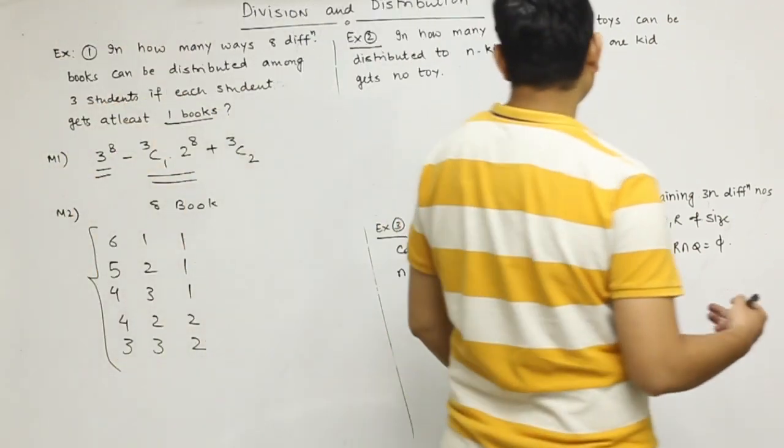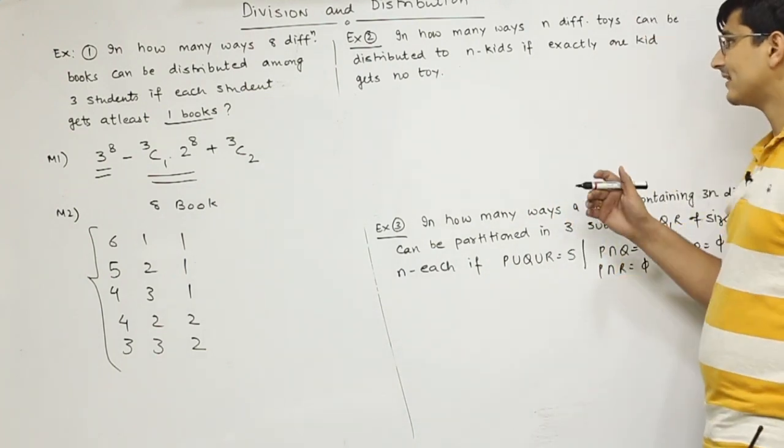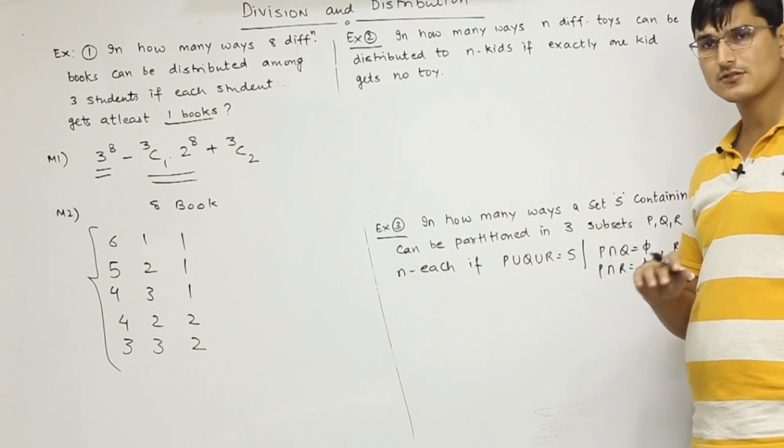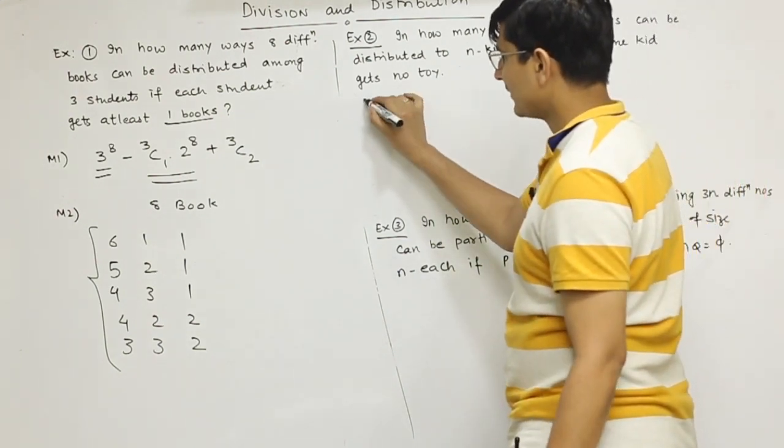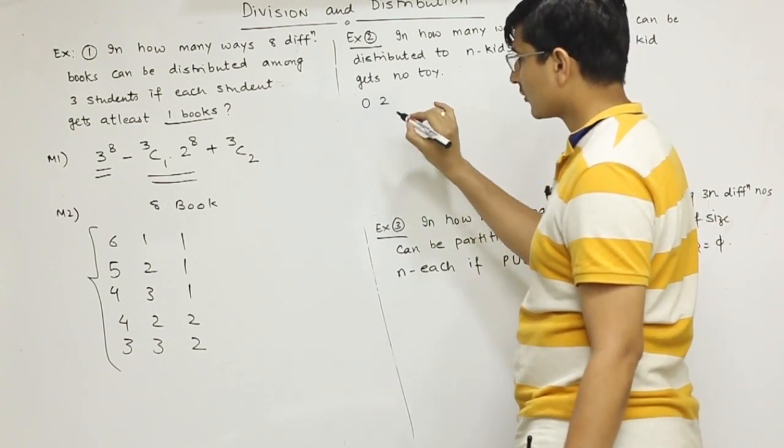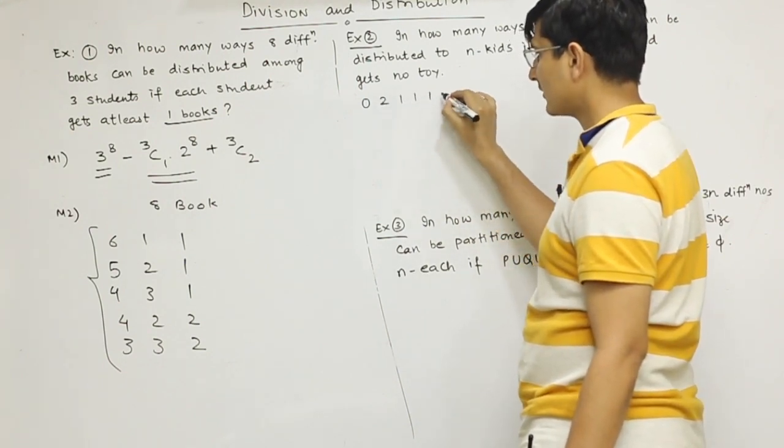In how many ways can n different toys be distributed to n kids if exactly one kid gets no toy? One child gets zero, one gets 2 toys, and the rest all get 1-1 toys.